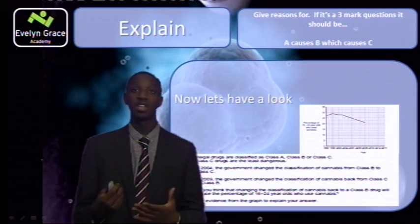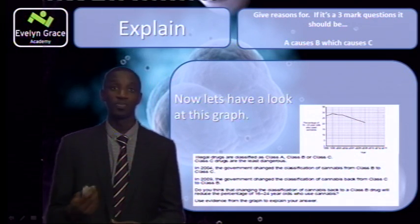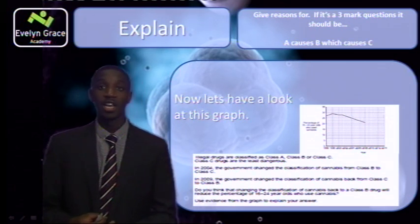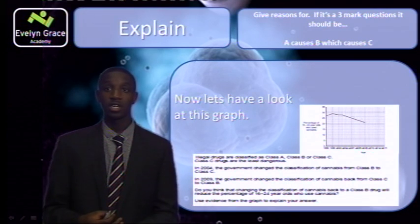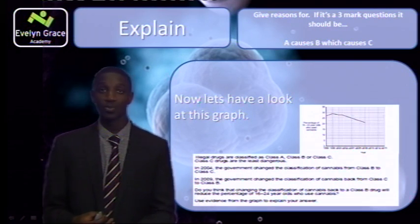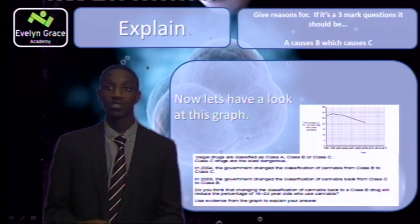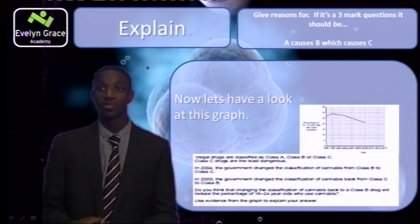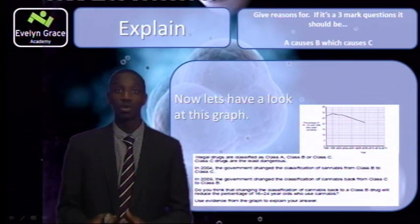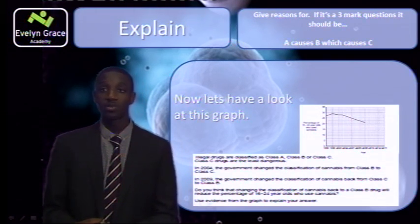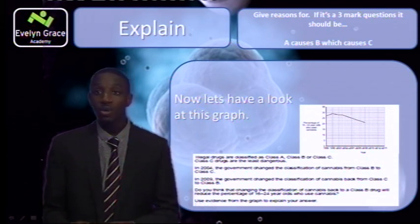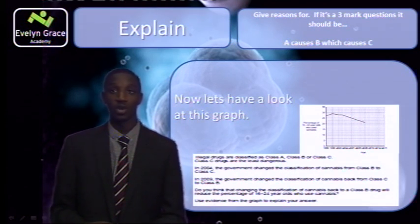Explain means when you give reasons for something. Here's another graph. It gives some information: illegal drugs are classified as class A, class B or class C. In 2004, the government changed the classification of cannabis from class B to class C. However, in 2009, the government changed it back from class C to class B. The question asks: do you think that changing the classification of cannabis back to class B will reduce the percentage of 18 to 24 year olds who use cannabis? Use evidence from the graph to explain your answer.